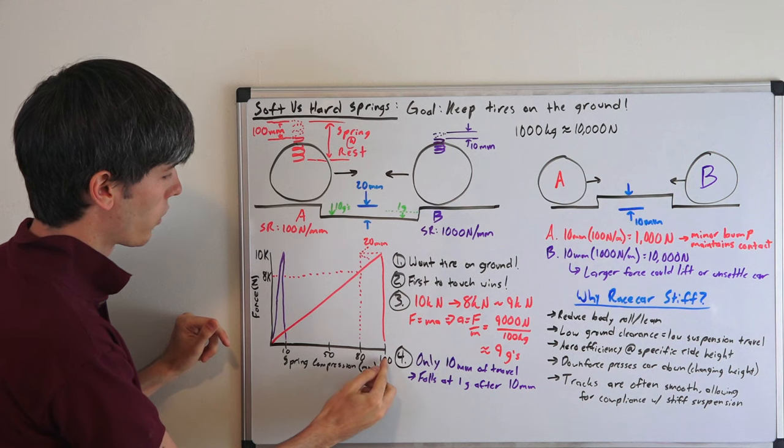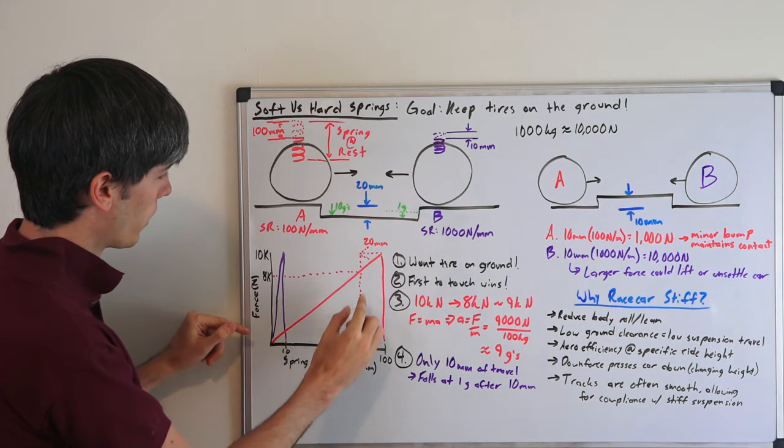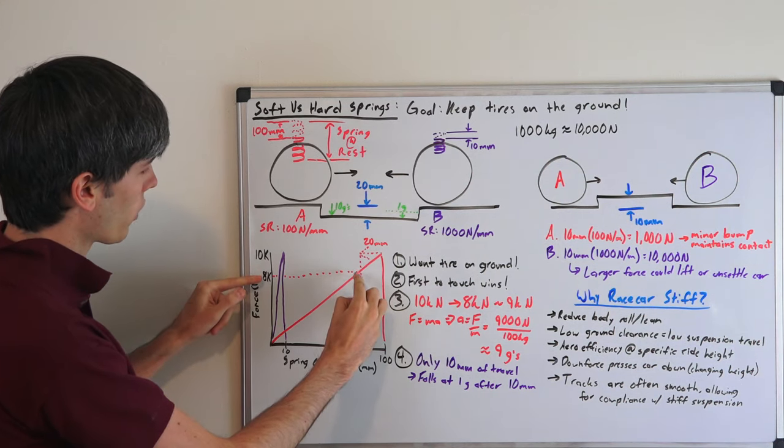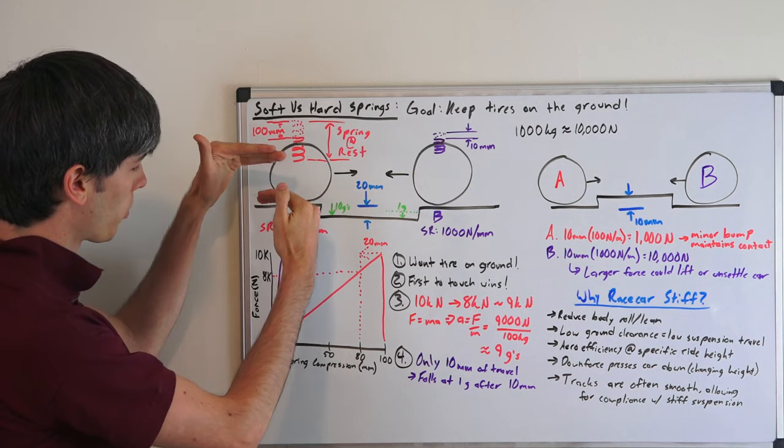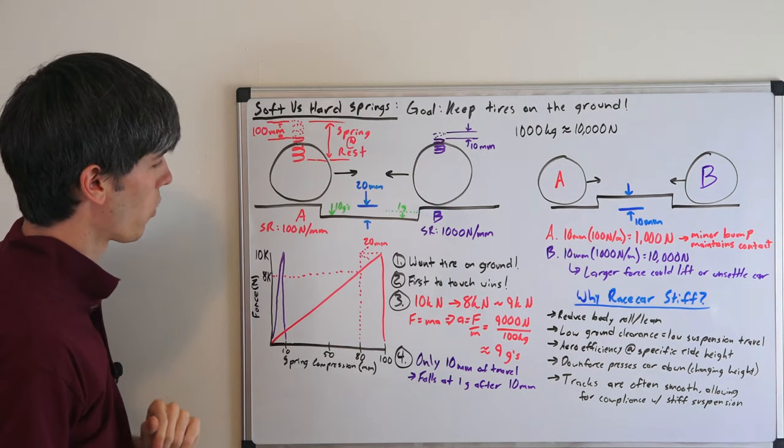So as it travels over it, you've got 20 millimeters. So it's going to go from a hundred down to 80. And so when it's at 80, now because we've got 80 millimeters of compression in the spring, we've got an 8,000 kilonewton force.